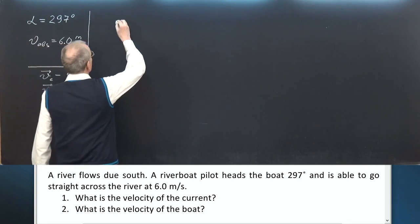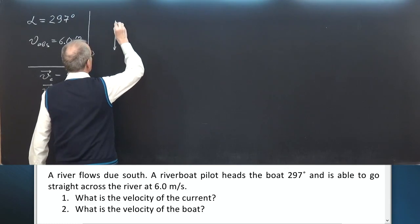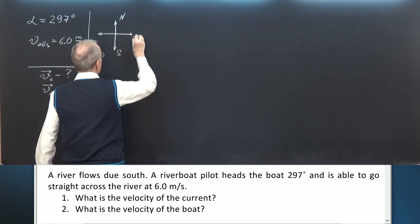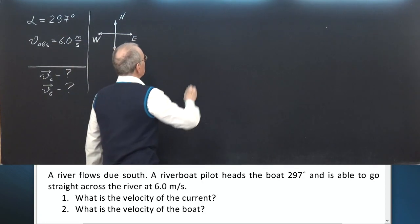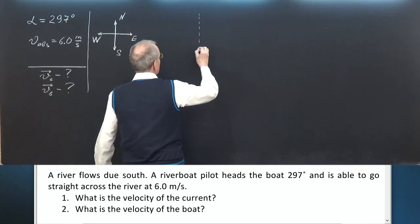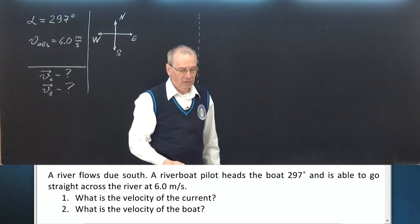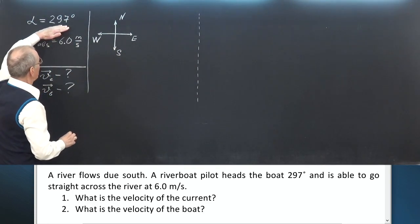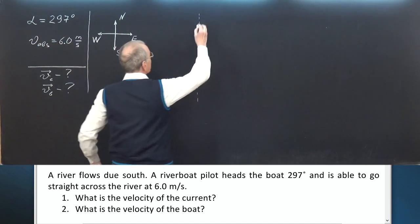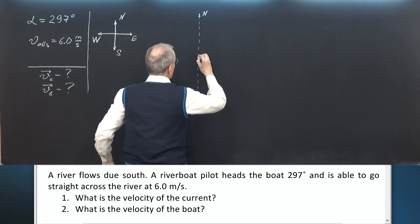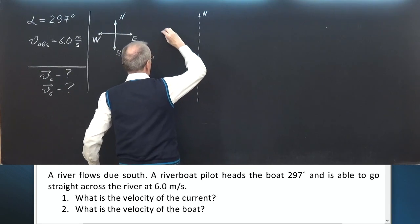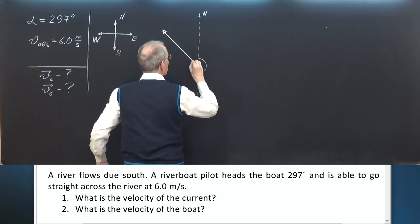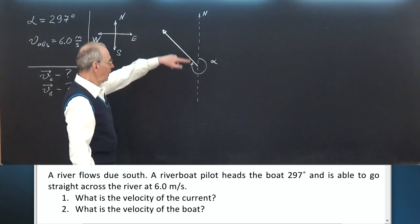First of all, let's show directions: northern direction, southern direction, to the east, to the west. Now let's show the velocity of the boat. This velocity has bearing 297 degrees from the north — this is bearing alpha — clockwise from the north.